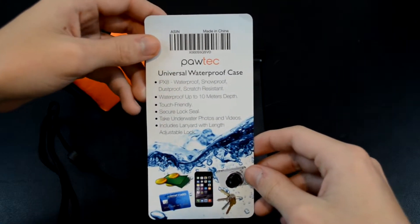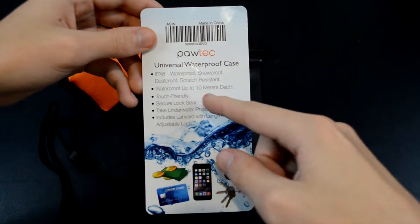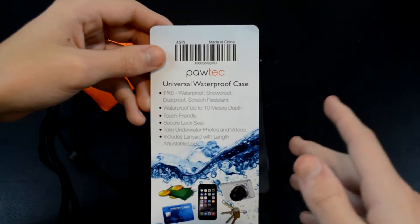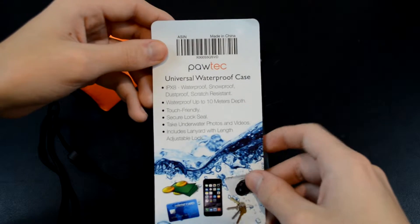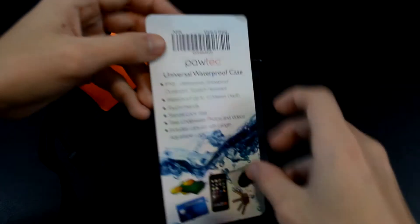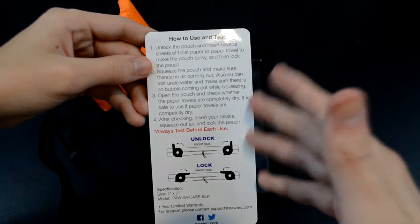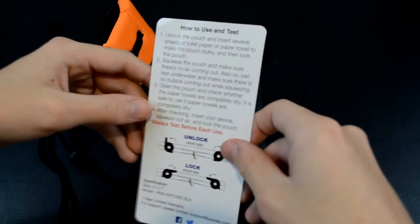It's IPX8 rated, so waterproof and dustproof up to 10 meters. You can swim with it. It's touch friendly, has a secure lock seal, and has a lanyard with an adjustable lock. You can see how to use and test. I suggest to test the pouch, just put some paper towels in there, take them out and see if they're dry or wet, and how to lock and unlock.